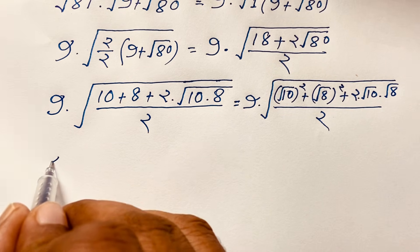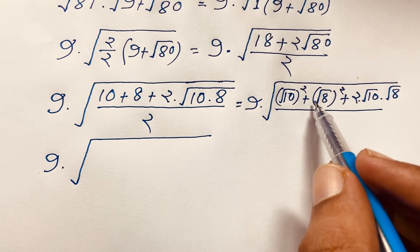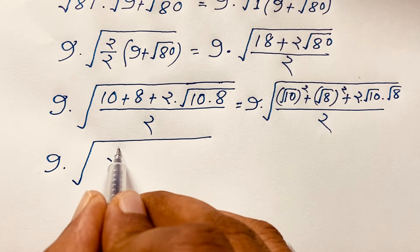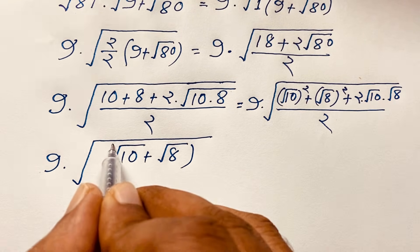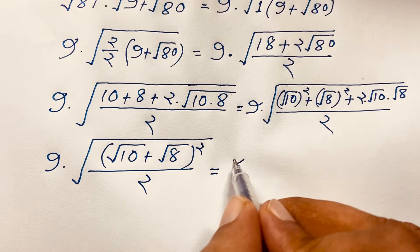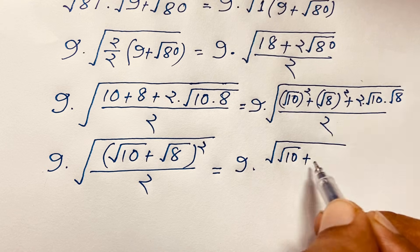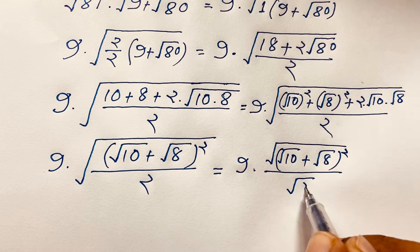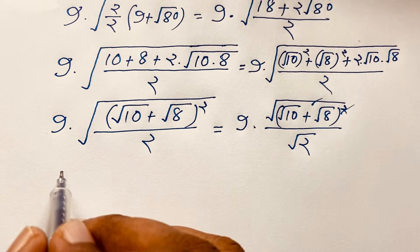Recognizing the pattern a² + b² + 2ab = (a + b)², where a is square root 10 and b is square root 8, so the expression becomes 9 times square root of (square root 10 plus square root 8) squared, over square root 2. The square cancels with the outer square root.